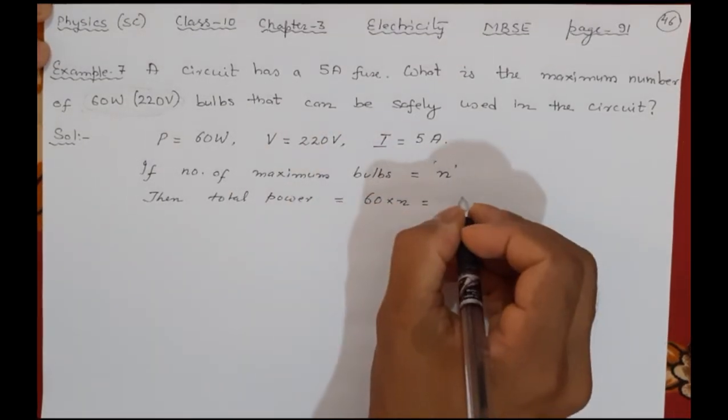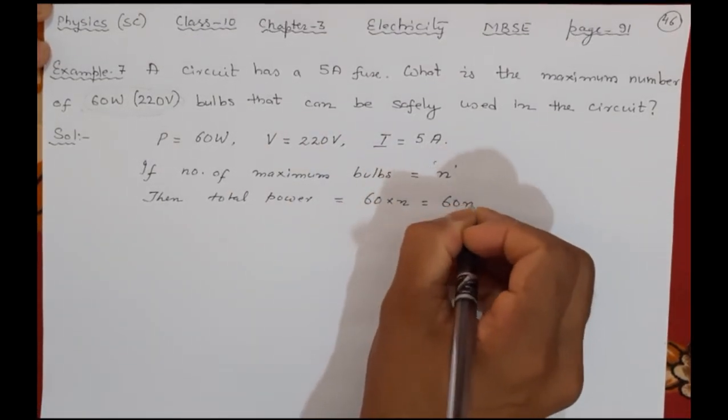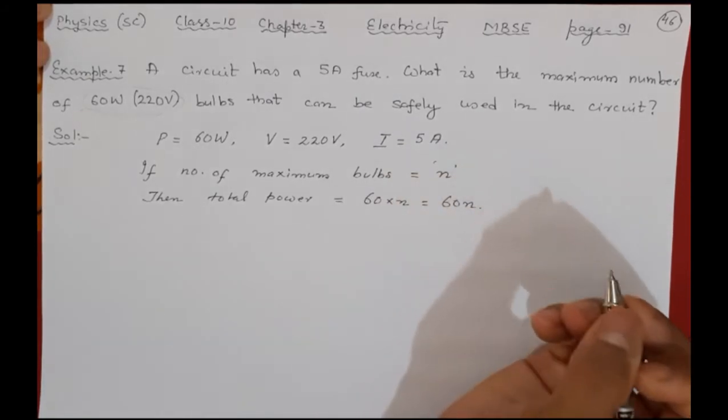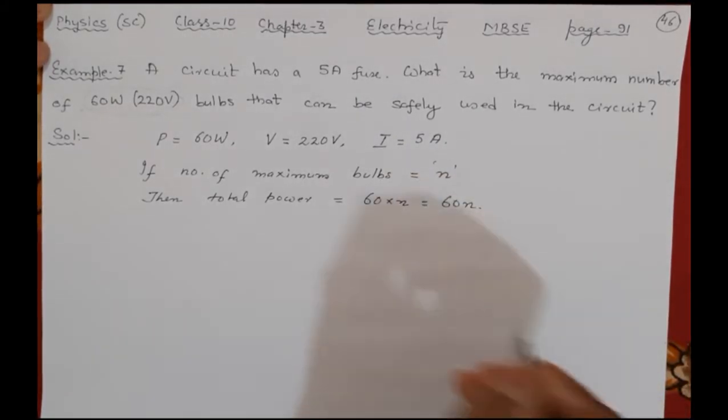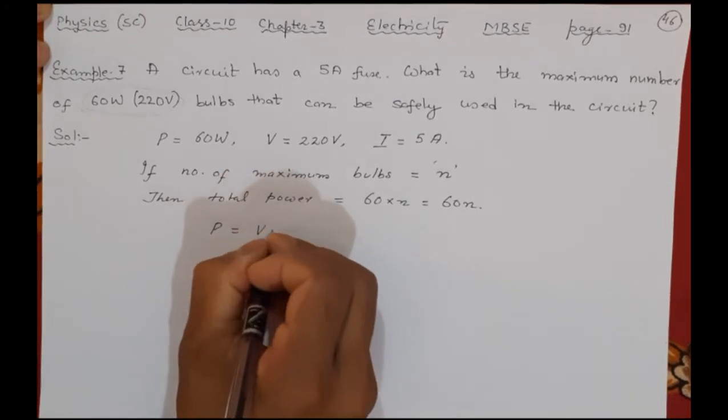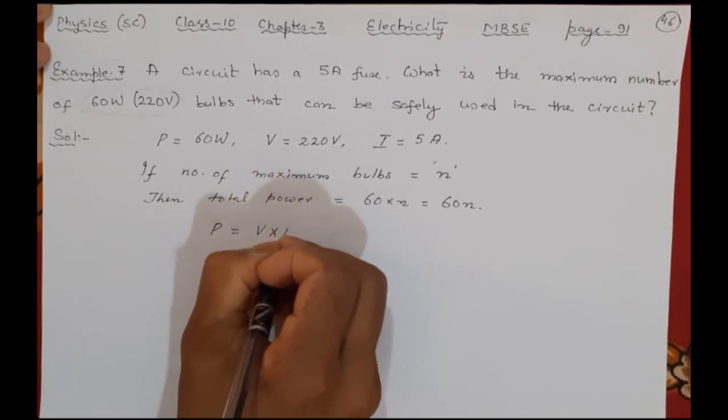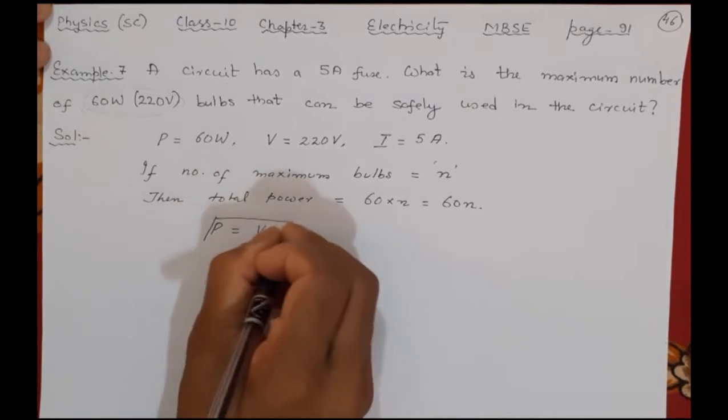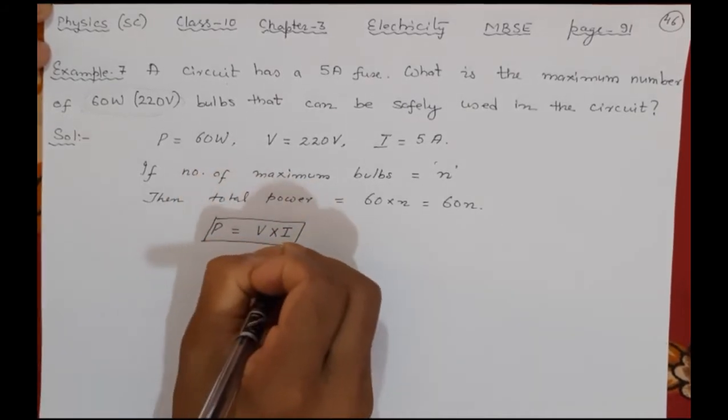60 into n means n many bulbs I am using. So it is 60n watt also you can write. You may not write the unit also. Now power is always V into I.